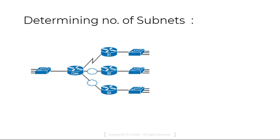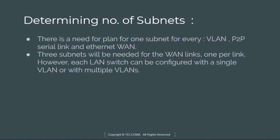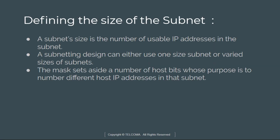There is a need to plan for one subnet for every WAN point-to-point link and Ethernet WAN, as discussed in the last class. So three subnets will be needed for the WAN links, one per link. However, each LAN switch can be configured with a single VLAN or multiple VLANs.